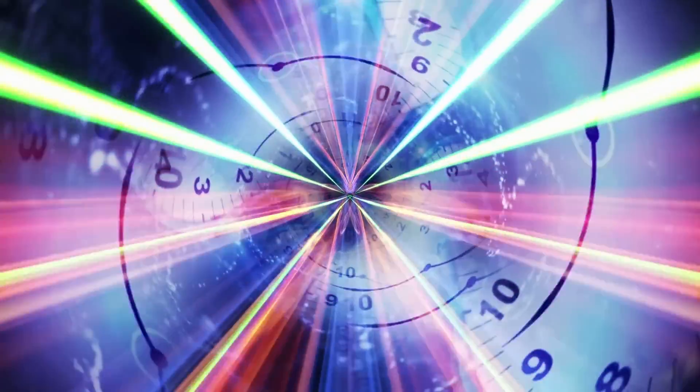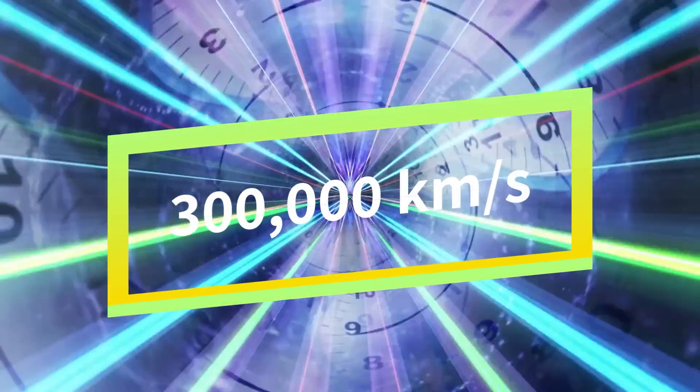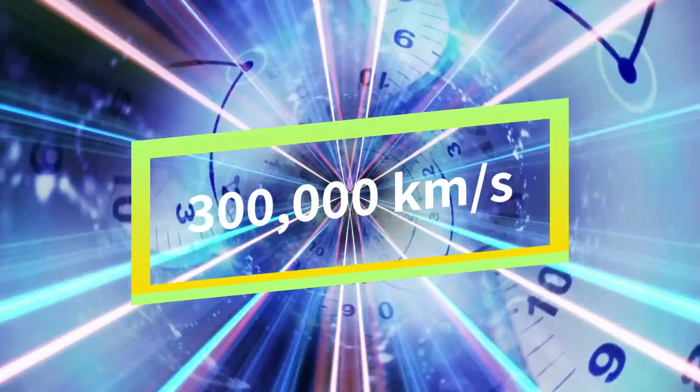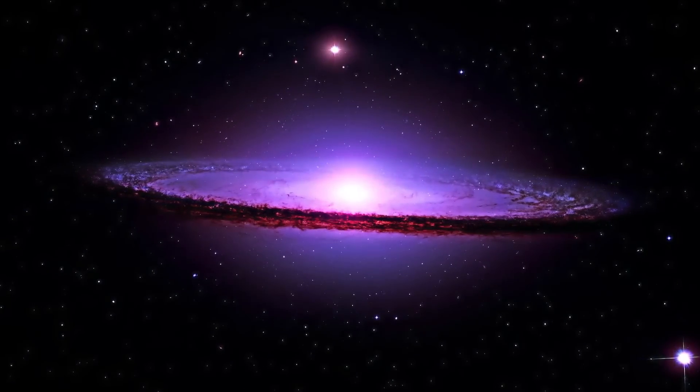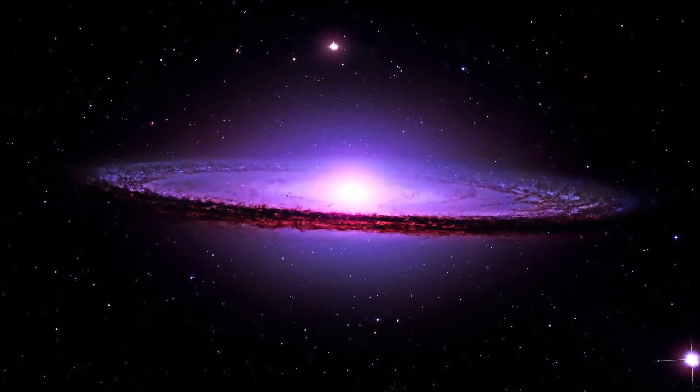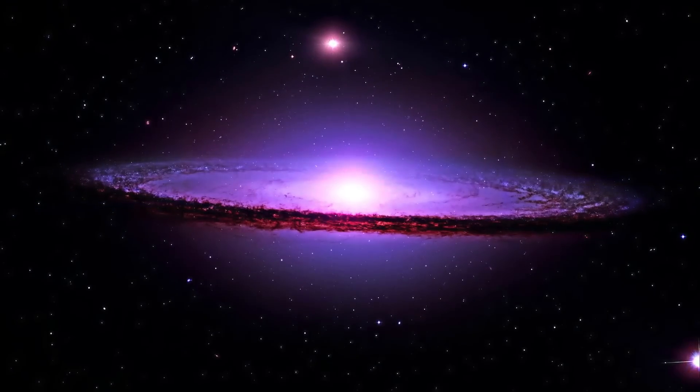Because light takes time to travel, about a second for every 300,000 kilometers. The image you see of a distant thing has already aged by the time it reached you. You're seeing the thing as it was sometime in the past.